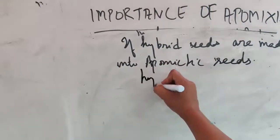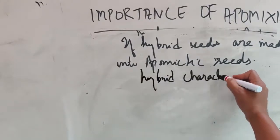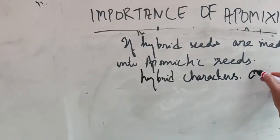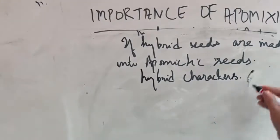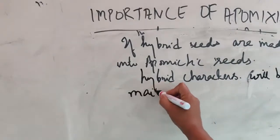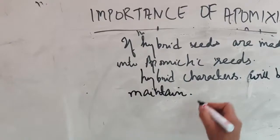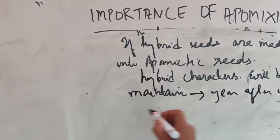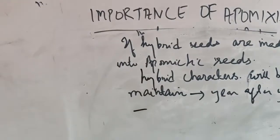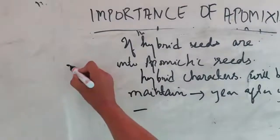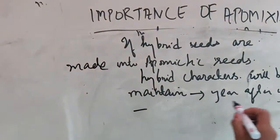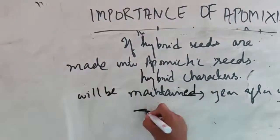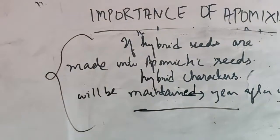Because there is no fertilization in apomictic seeds, hybrid characters are maintained. The characters will be maintained year after year, generation after generation. Farmers don't have to buy again and again, saving money. If hybrid seeds are made into apomictic seeds, then hybrid characters will be maintained. Hybrid seeds are costly and farmers have to buy every year because the characters segregate when sown in soil.